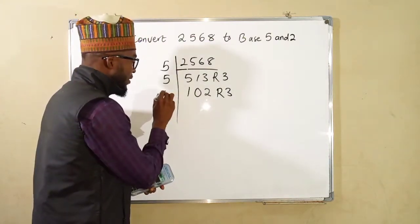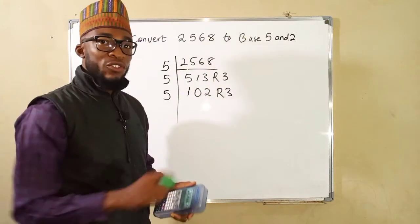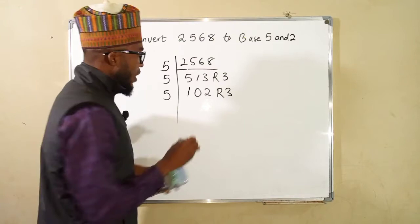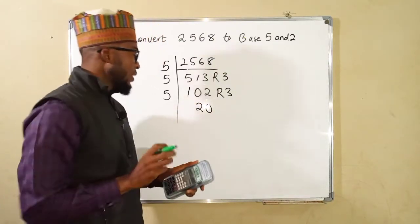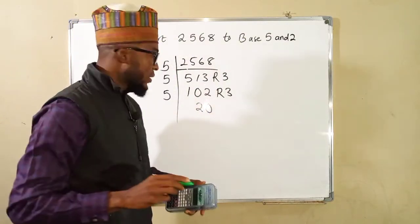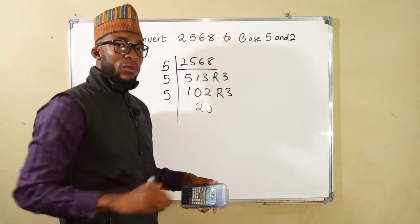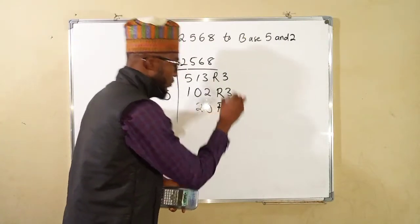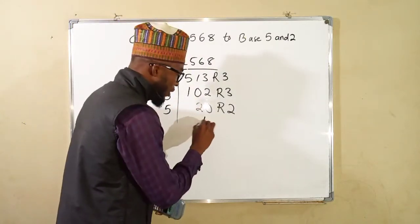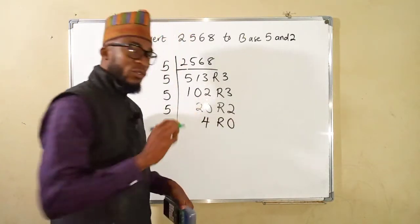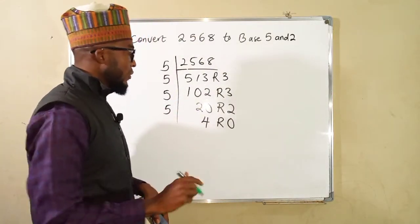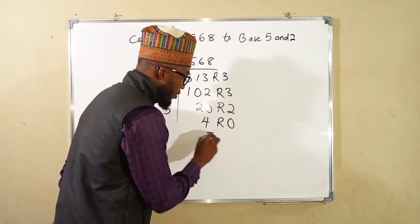We have 102, we again divide 102 by 5. 102 divided by 5 what we have is 20. But if you times 20 by 5 you shall get 100 but this is 102, this means that we have a remainder of 2. 5 again it can go into 20 4 times without remainder. But 5 can no longer go into 4 so we stop. We are going to take these numbers in this form upward.